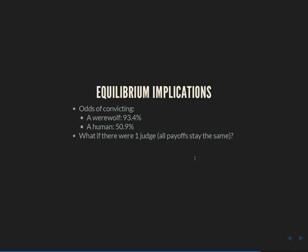What about going back to a single judge? One judge would always vote according to his badger milk ritual results, giving 90% conviction of werewolves and only 10% conviction of innocents. That's actually better for the judges' payoffs too. This suggests there's an asymmetric equilibrium where two judges always vote to execute blindly — they're patsies — and one judge is the real arbiter voting based on his ritual. That's equivalent to just having one judge, and it's actually better for society than the symmetric equilibrium.